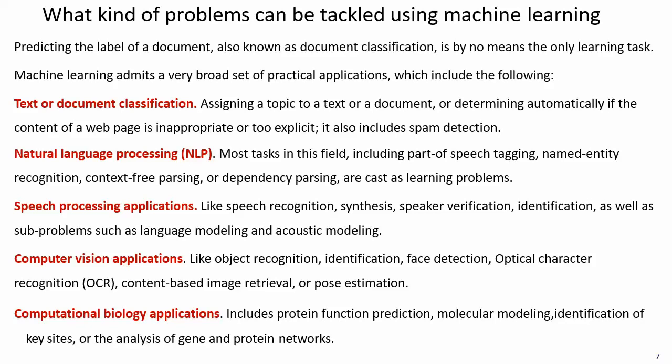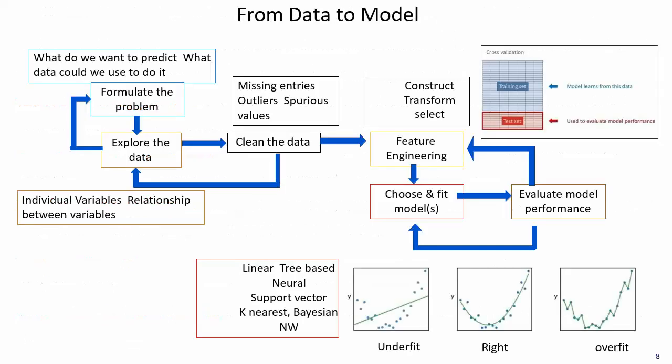Fake detection is another application — if images are morphed on the internet, analysis can determine whether a given image is fake or not. In the research area, machine learning is used for biological predictions, modeling, and identifying gene proteins and networks. This is the flow for a machine learning algorithm: first we formulate the problem, then explore and clean the data.